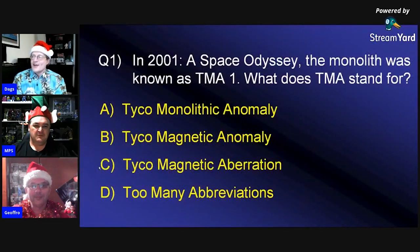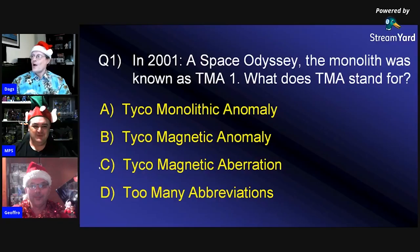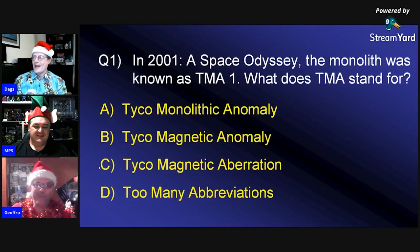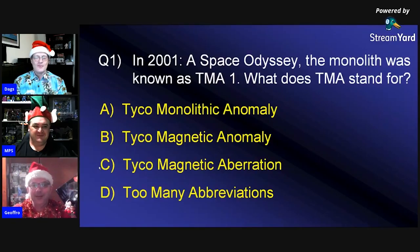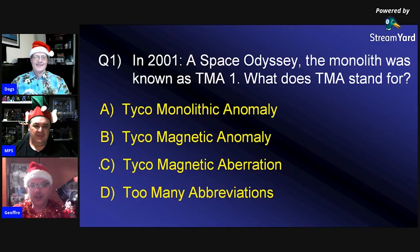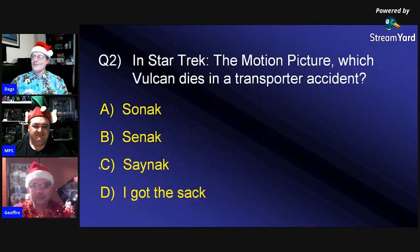Question one: In '2001: A Space Odyssey,' the monolith is known as TMA-1. What does TMA stand for? Is it A) Tycho Monolithic Anomaly, B) Tycho Magnetic Anomaly, C) Tycho Magnetic Aberration, or D) Too Many Abbreviations? One participant says B, the other says A.